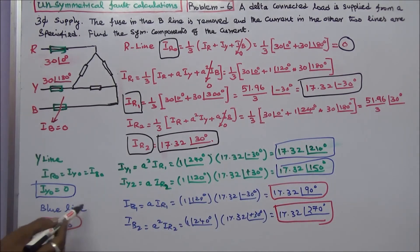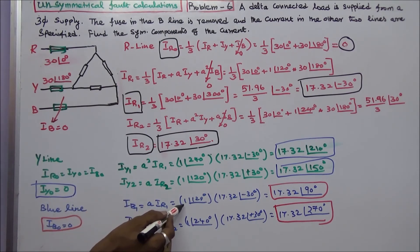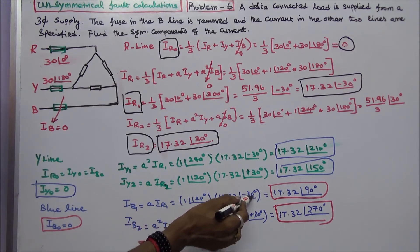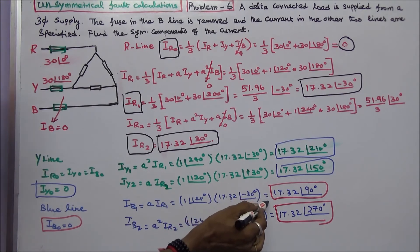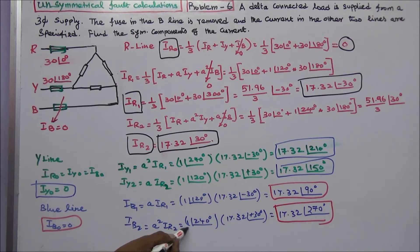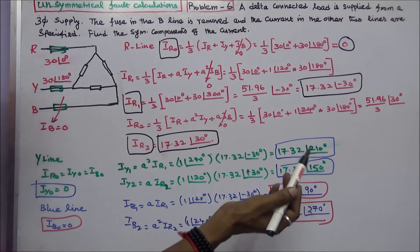Next, we consider the blue line. IB0 equals 0. The positive sequence current IB1 equals A·IR1, which is 1 angle 120 degrees into 17.32 angle minus 30 degrees, equaling 17.32 angle 90 degrees. The negative sequence current IB2 equals A²·IR2, where A² is 1 angle 240 degrees and IR2 equals 17.32 angle 30 degrees, therefore IB2 equals 17.32 angle 270 degrees.